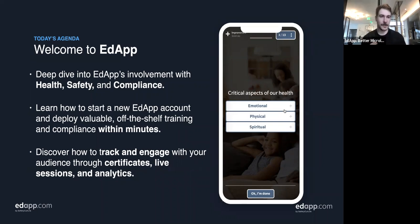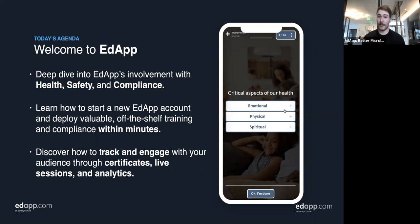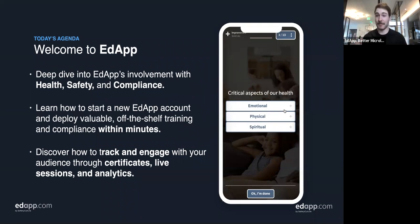So what specifically are we going to be looking at today? We're going to be focusing on the content library — a library of over 700 courses, dozens or maybe even hundreds of which are relevant to health, safety, and compliance that you can use, take, rebrand, edit, and redeploy to your teams. That only takes a few minutes. We're actually going to do it today over the course of the next 45 minutes, so you'll be able to see how that works.